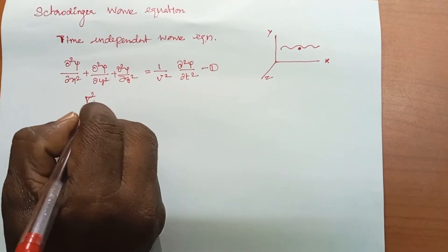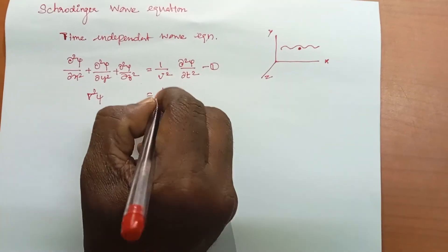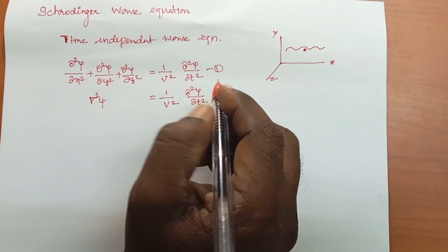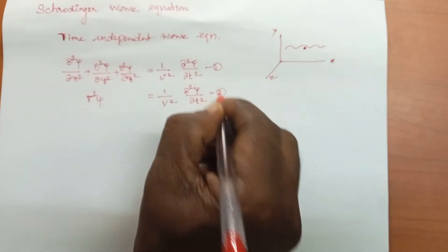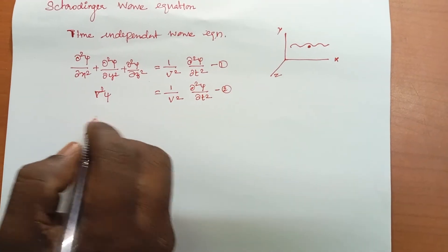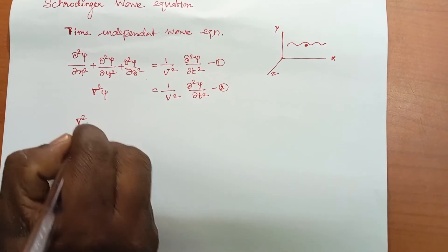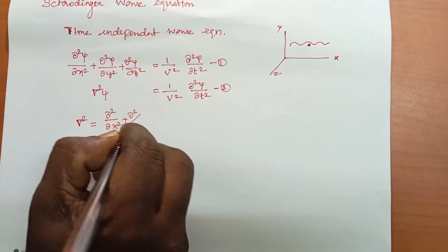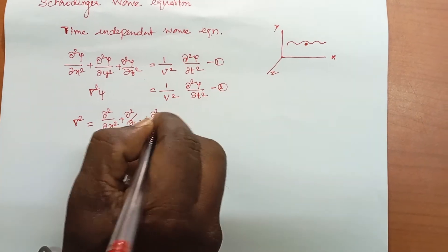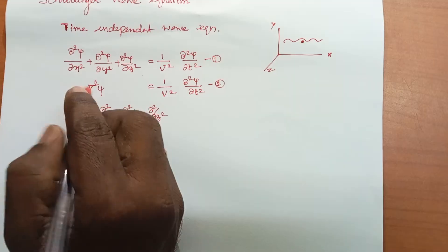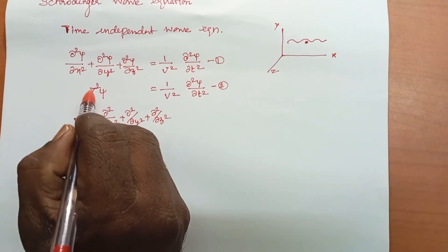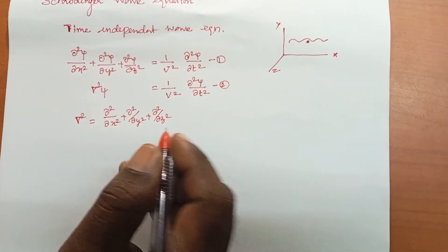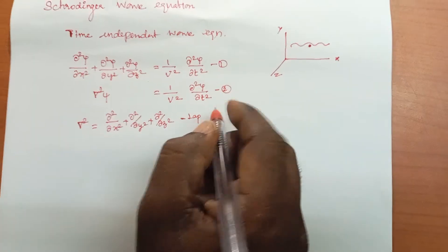We can write this as ∇²ψ = (1/v²)(∂²ψ/∂t²), which is equation number 2. Here, ∇² (del square) is the Laplacian operator, defined as ∂²/∂x² + ∂²/∂y² + ∂²/∂z².